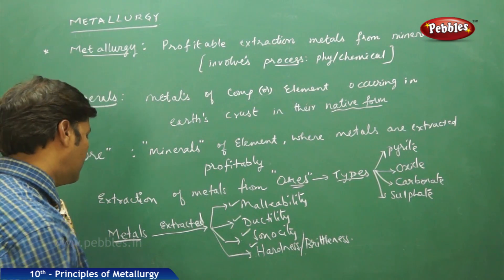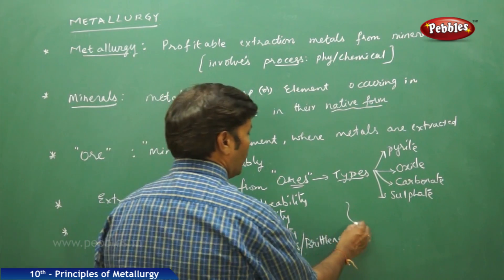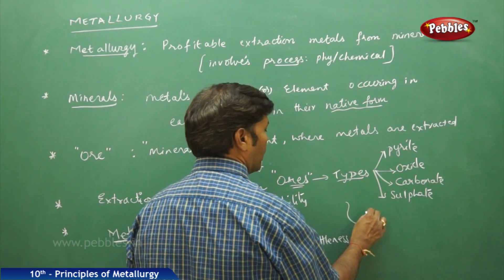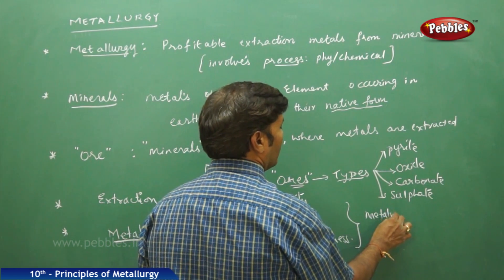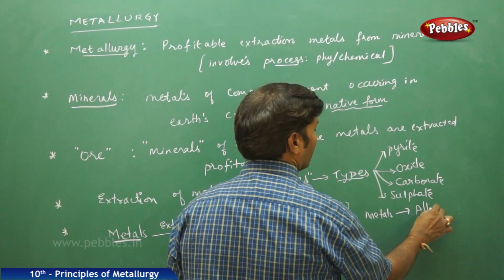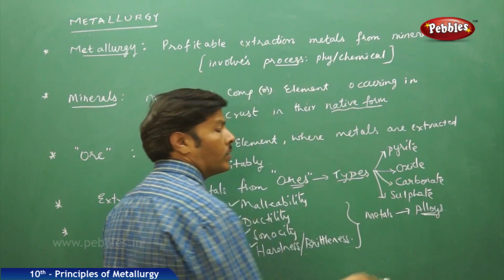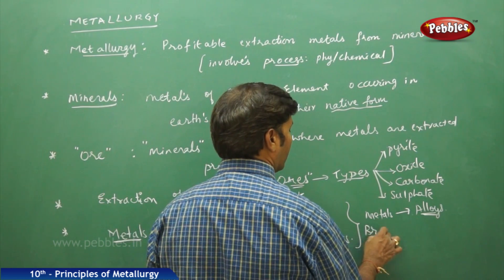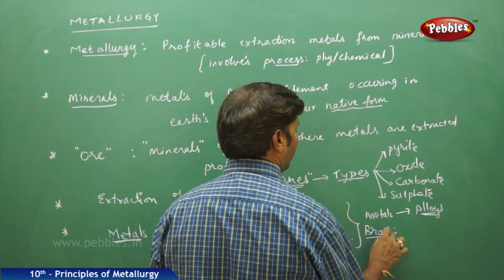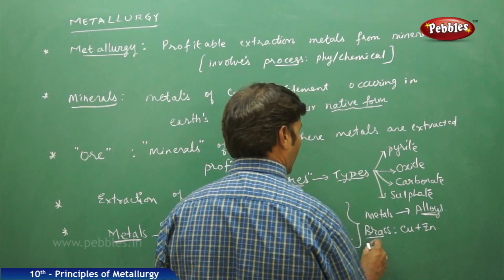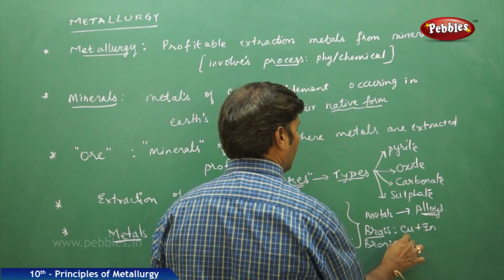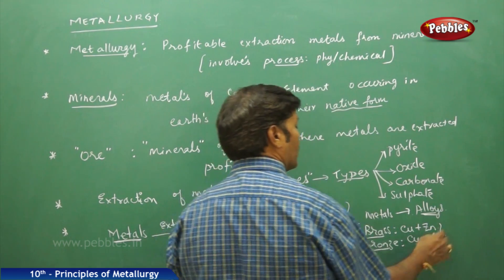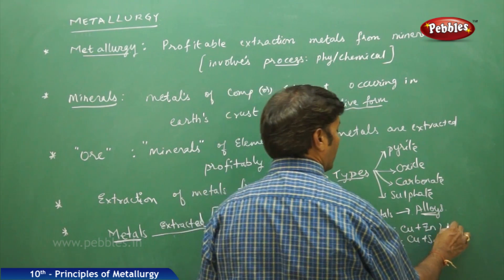Metal extraction from mineral ores also involves the formation of alloys. Metals are available in the form of alloys. For example, brass is an alloy of copper and zinc, and bronze is an alloy of copper and zinc.